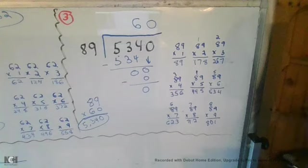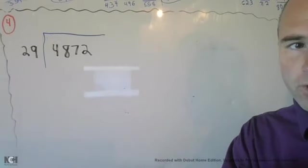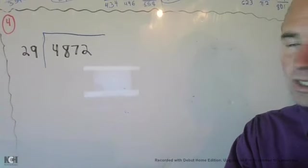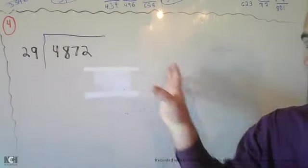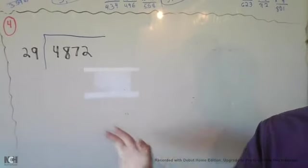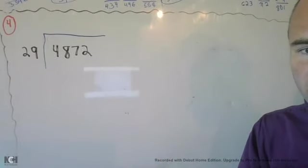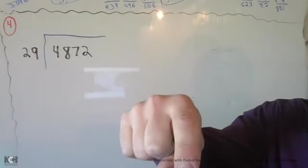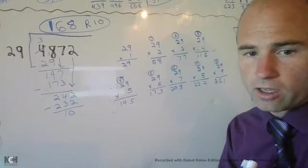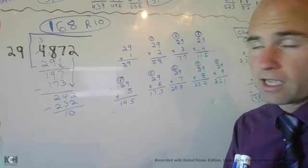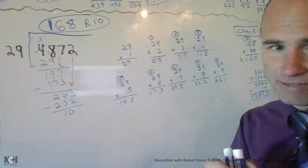We're going to move on to number four. Number four is 4872 divided by the divisor of 29. Now I didn't do something right here that you may want to do. What might that be? Before you actually start solving, go ahead hit the pause button and do that and solve for it now.